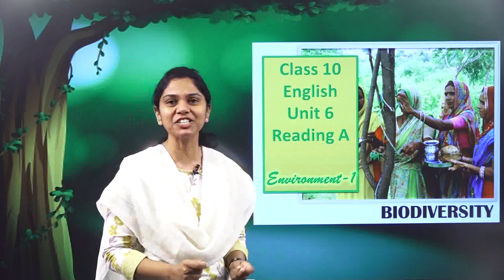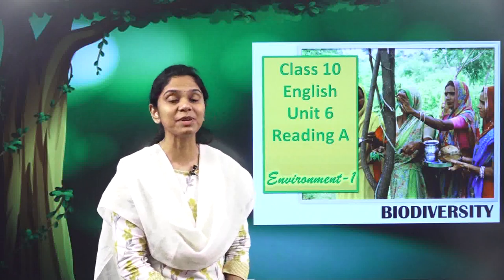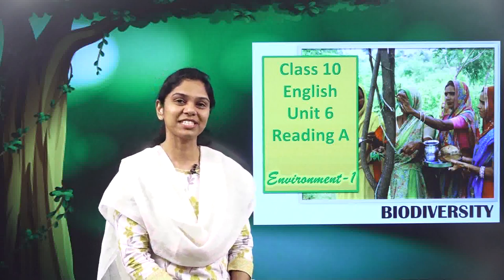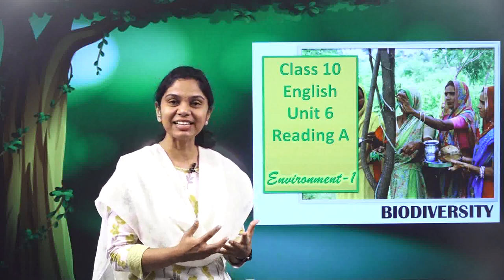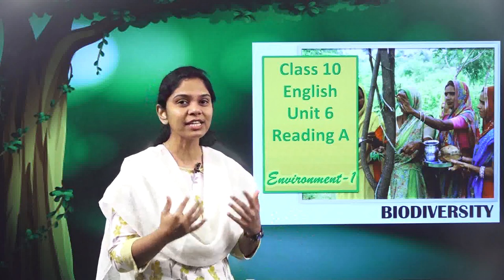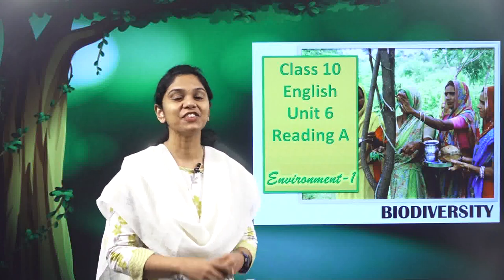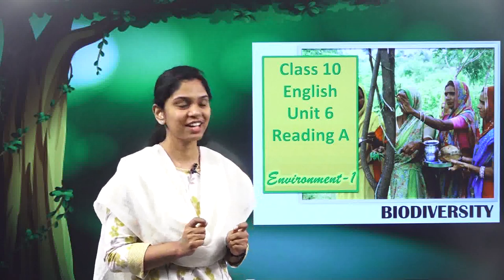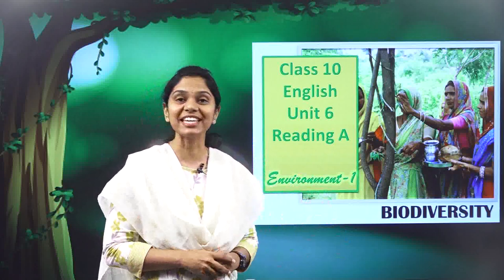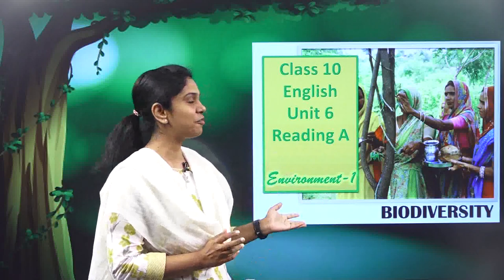Somewhere along the line we forget that each species of each type of life on earth is very important for human beings to survive. Right now the world has come to a stage where we feel that a good job, good education, and a decent place to live are all that's required. We forget the root of life — the diverse life around us — that is what we need to stay alive.